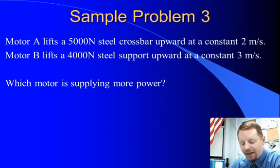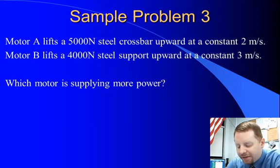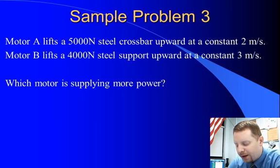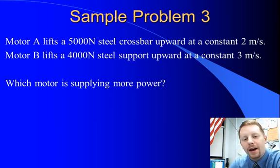Let's take a look. If motor A lifts a 5,000 newton steel crossbar upward at a constant 2 meters per second, and motor B lifts a 4,000 newton steel support upward at 3 meters per second, which motor is supplying more power?